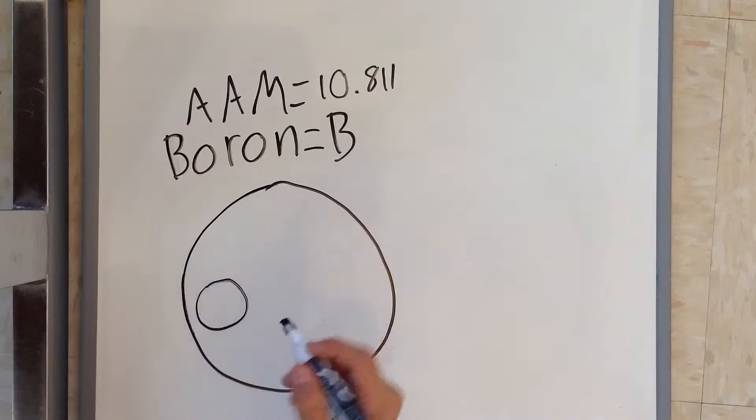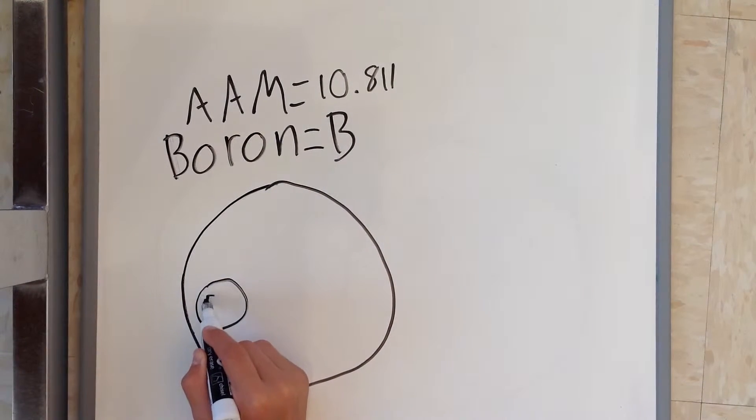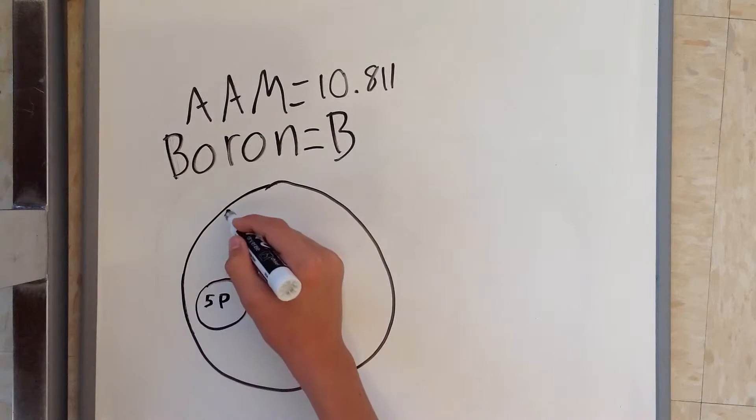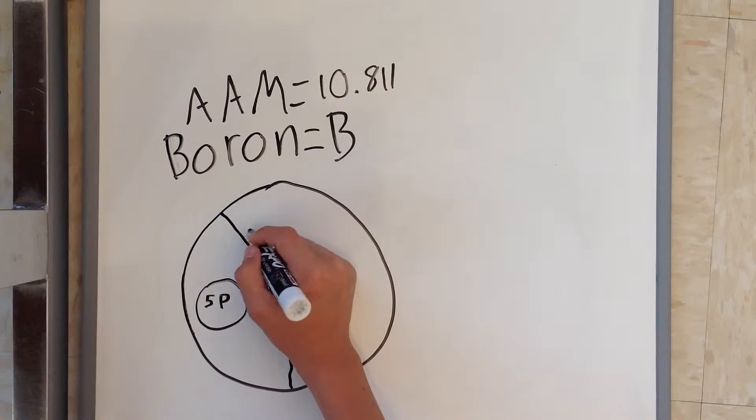The first thing you're going to want to do is start off with your atom. In this case, it's boron, and boron has five protons and it also has five electrons because it's an atom.